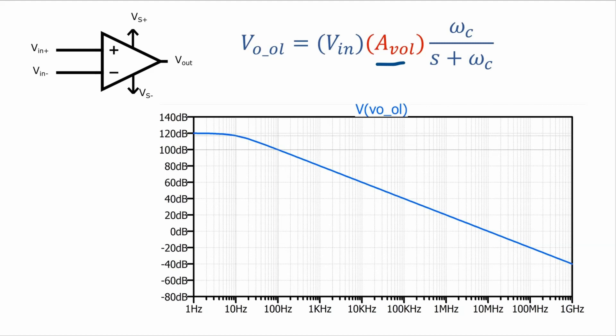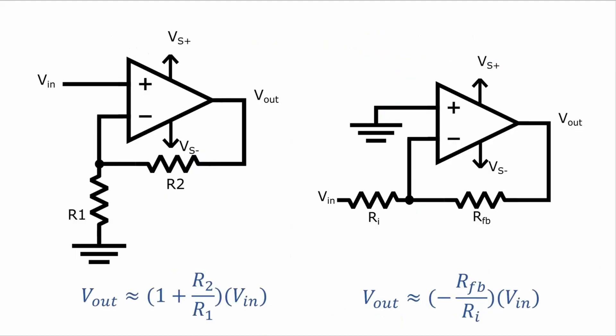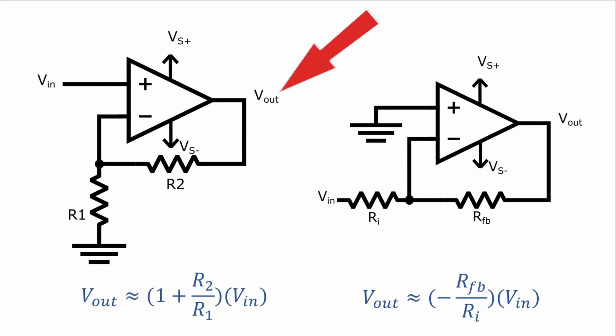In the open-loop configuration, the gain is not well controlled — it is only constant for a small range of frequencies. On top of that, the AVOL value can range widely, even for the same device. But by adding feedback, like with an inverting or a non-inverting configuration, we can get control over the gain and, as we'll see, control over the frequency response as well.